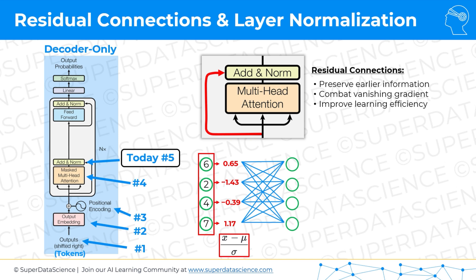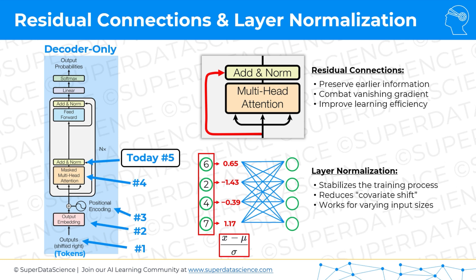Note this is different from batch normalization, which was originally introduced for computer vision or convolutional neural network tasks. This is layer normalization and it is much better for parallelization if you want to get quite technical. The benefits of layer normalization are that it stabilizes the training process, it reduces covariate shift, and it works for varying input sizes. We're not going to go into all these technical aspects — I just wanted to mention them.